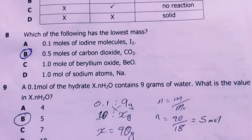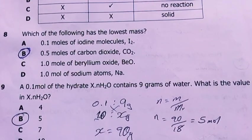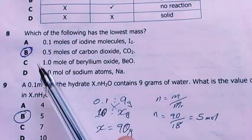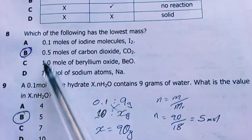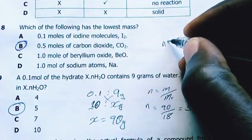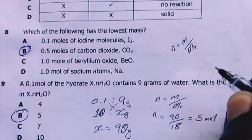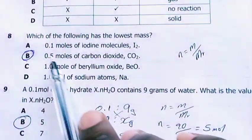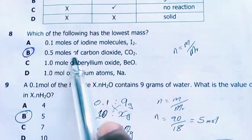Question eight, which of the following has the lowest mass? You have to convert the moles to mass. You are given the substance here, then you are given the moles here. The formula to use is number of moles equals mass over molar mass or relative molecular mass or relative formula mass.